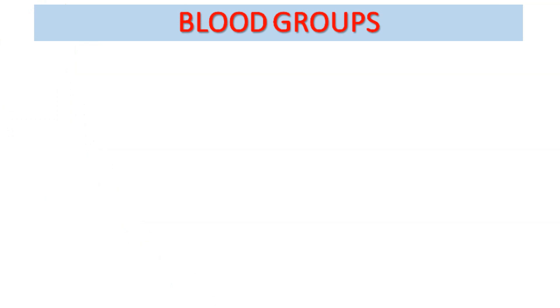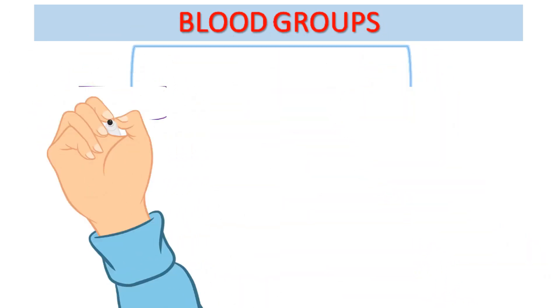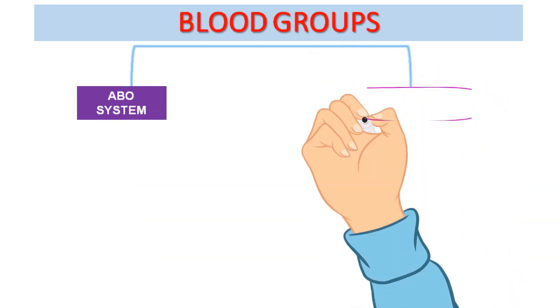Blood groups: the process of injecting blood into the body of patients undergoing surgical operations is called blood transfusion. Blood taken from a healthy person, known as the donor, is introduced into the patient's veins. For doing so, it is necessary that the type of blood to be transfused be compatible with the type of blood of the receiving person, known as the recipient. There are two major systems of blood grouping: the ABO system and the RH system.